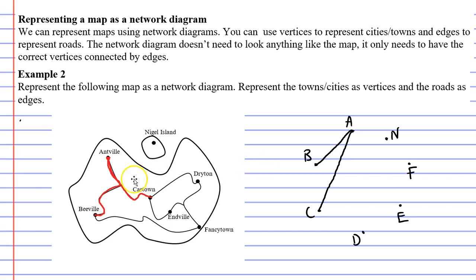Okay, so now let's look at Bville. We already mentioned Bville is connected to Antville. And we can see that Bville is also connected to fancy town. So we'll go from B through to F.